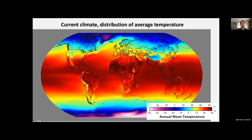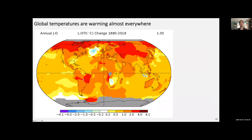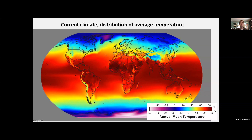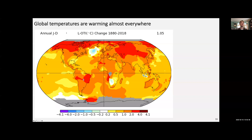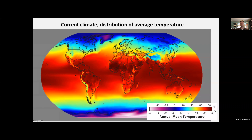To get to the idea of the velocity of climate change, we first have to realize there is a natural gradient in temperature — a change in temperature in space. As you go further north, it gets colder; as you go up, it gets colder. That's the first ingredient. The second ingredient is simply the fact that it's warming all over the place. This map shows how global temperatures are warming in terms of trends — a kind of globally uniform increase in temperature.